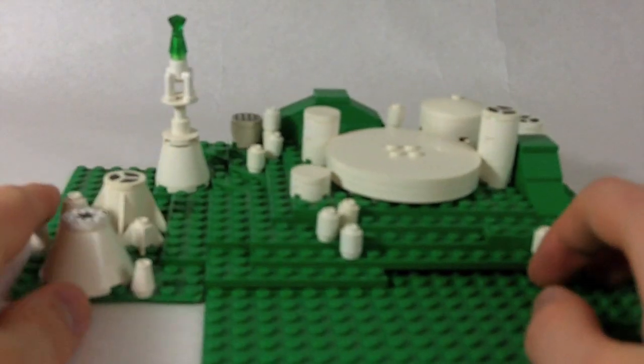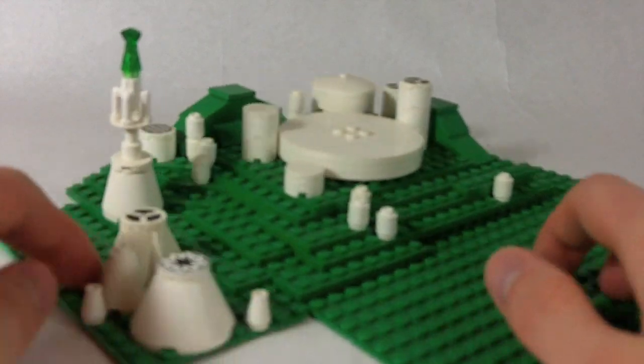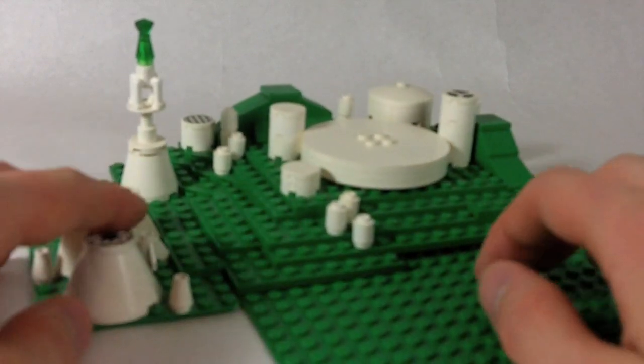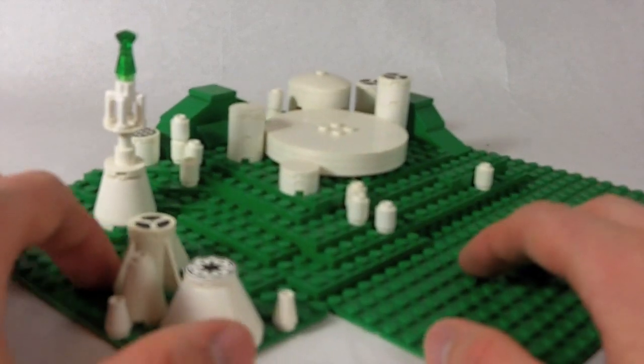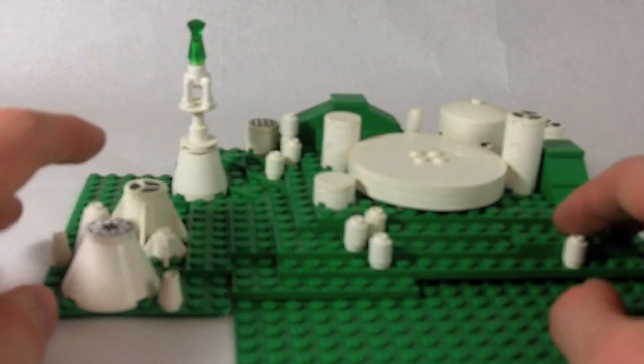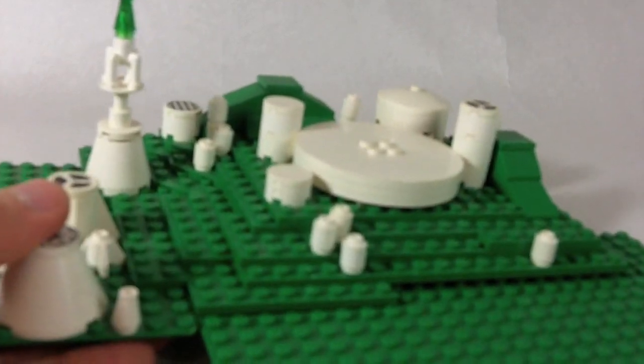So today's how to build is about this microscale Svelte campus. This shows up briefly as a background shot in the Svelte commercial a couple times. But yeah, let's take a closer look at this.